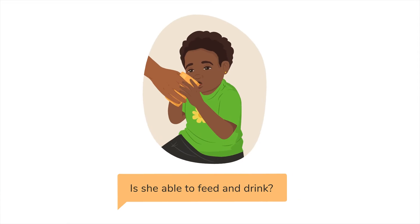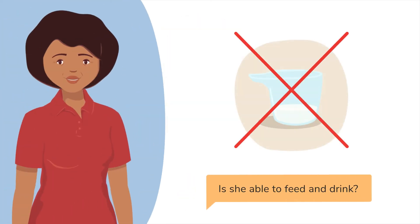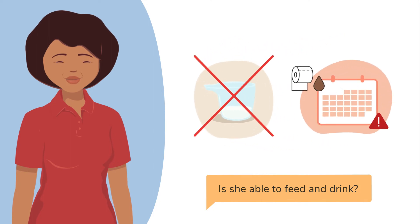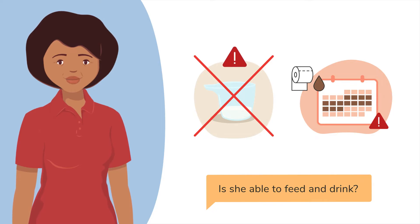Is she able to feed and drink? If the child cannot feed or is not able to absorb nutrients, such as with severe diarrhea, this is a danger sign that requires an urgent referral.